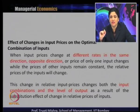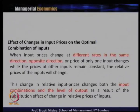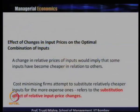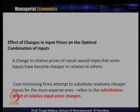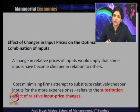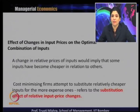Whenever there is a change in input prices, it affects the input combination and the level of output as a result of the substitution effect of the change in relative prices. A change in relative input prices implies that some inputs have become cheaper relative to others. A cost-minimizing firm attempts to substitute relatively cheaper inputs for more expensive ones — this is referred to as the substitution effect of relative input price change.